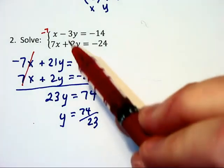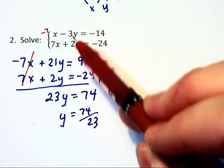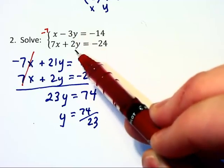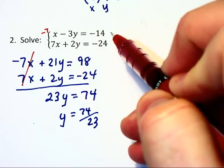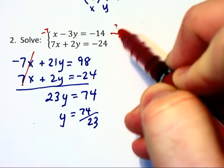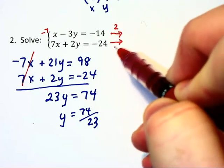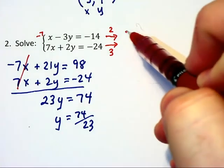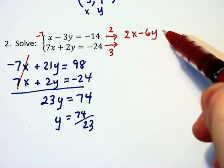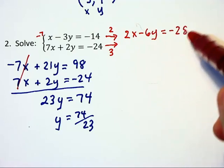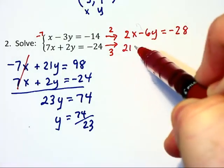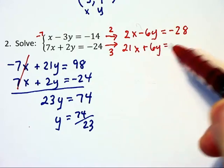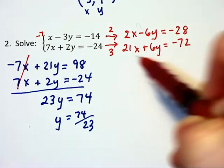We can go back to the original problem and eliminate the y's instead. We said earlier that they both go into 6y. So if we multiply that first equation by 2 and the second equation by 3, we will now have 2x minus 6y equals negative 28 and 21x plus 6y is equal to negative 72.